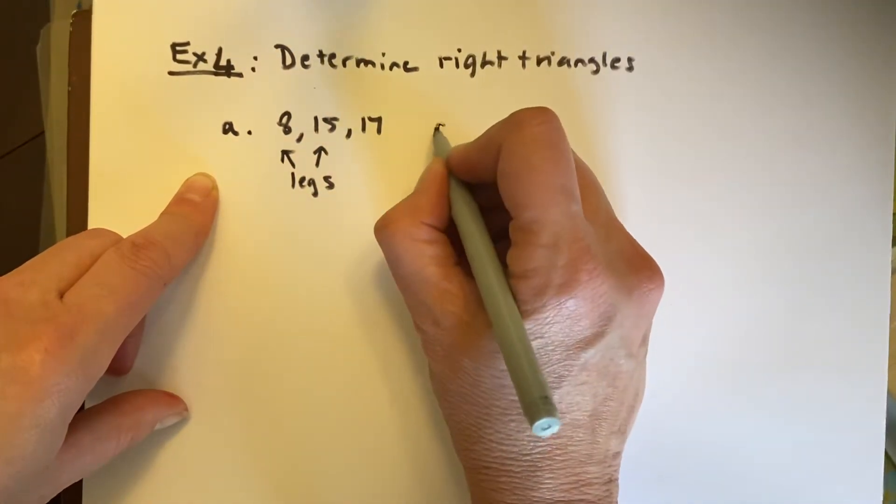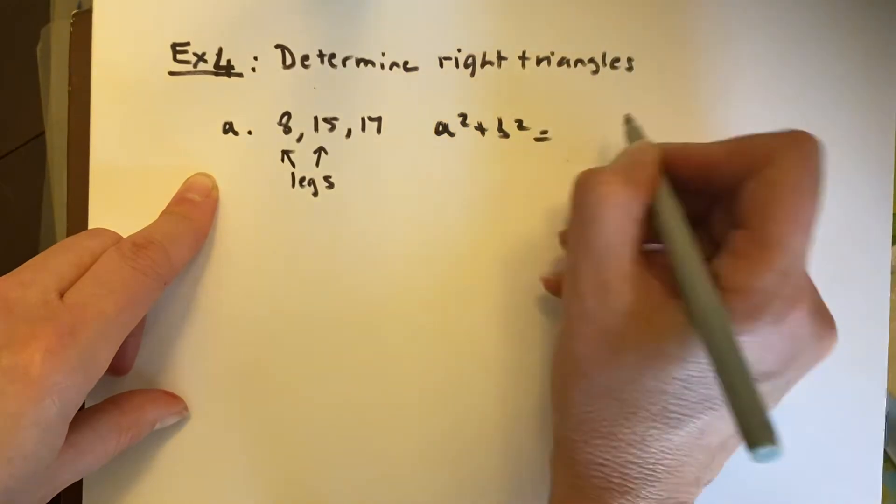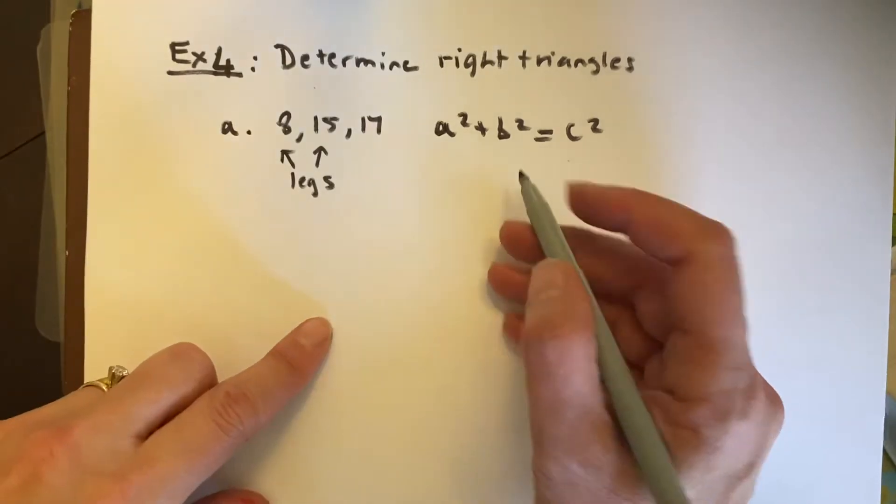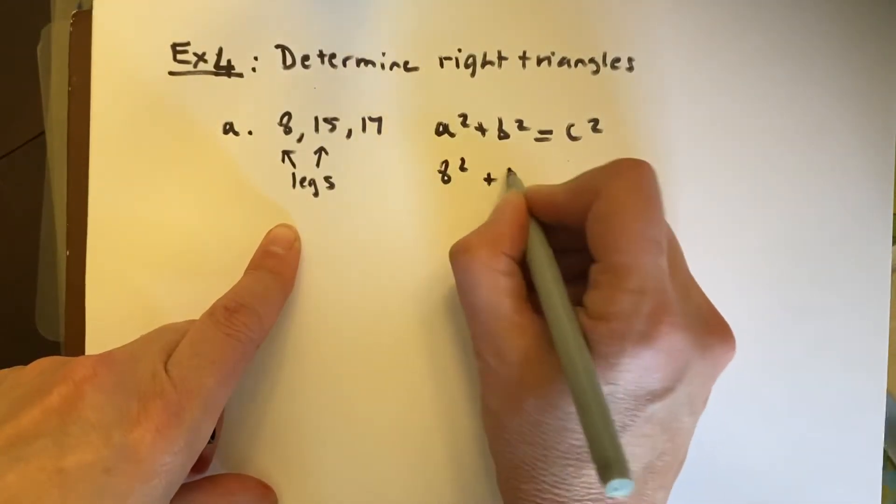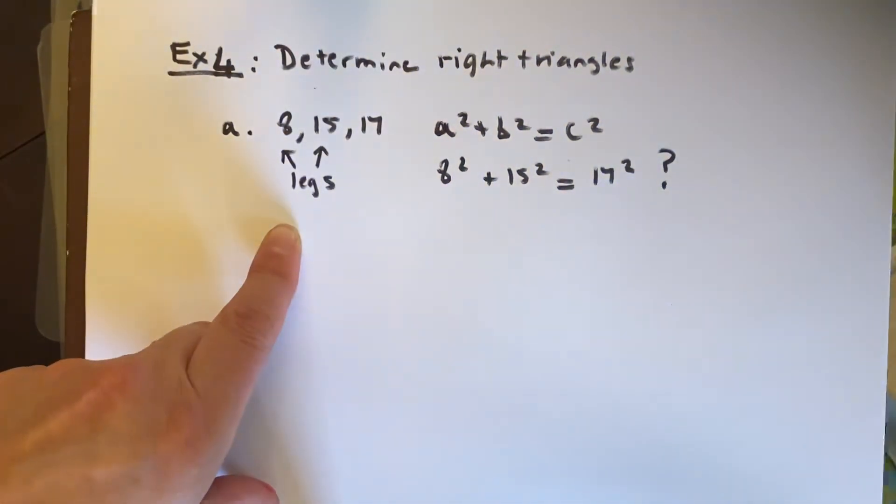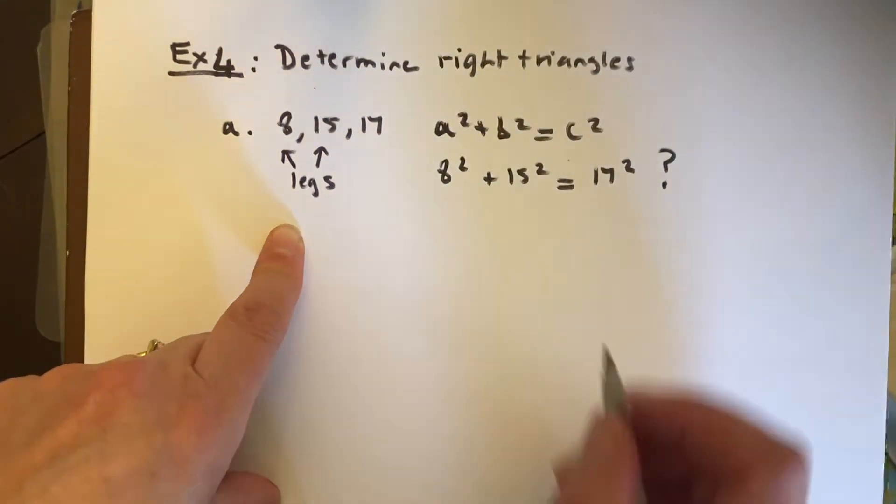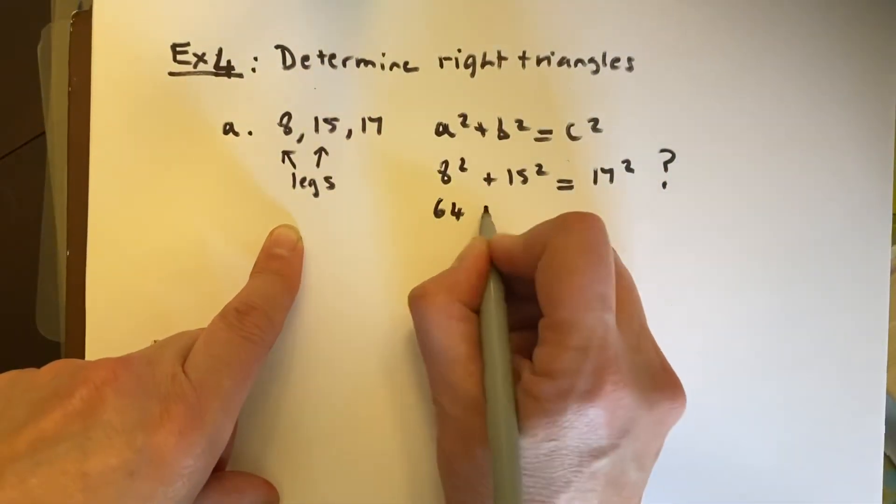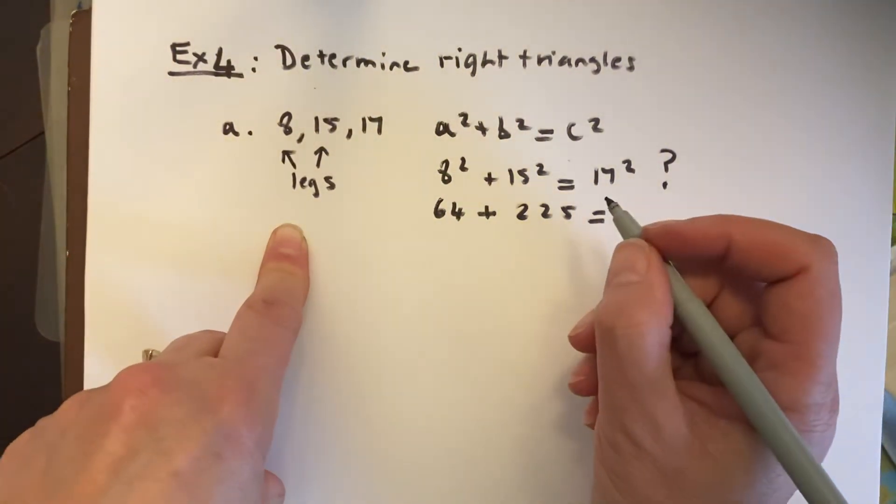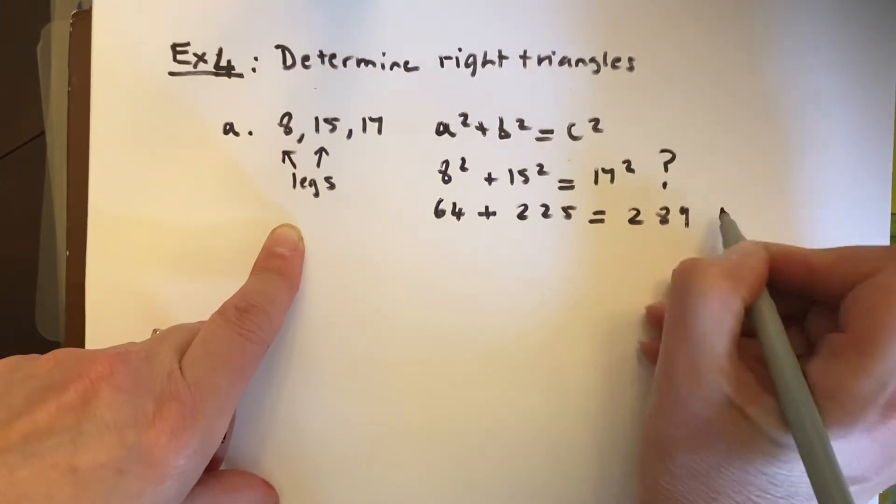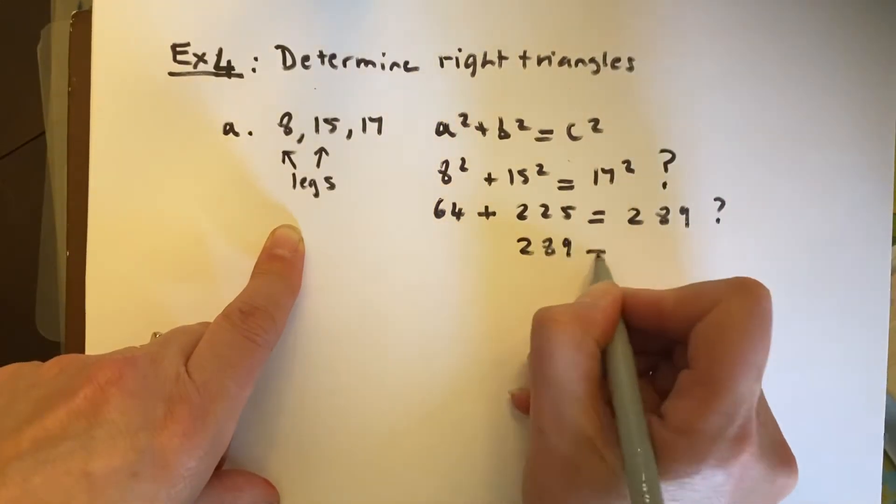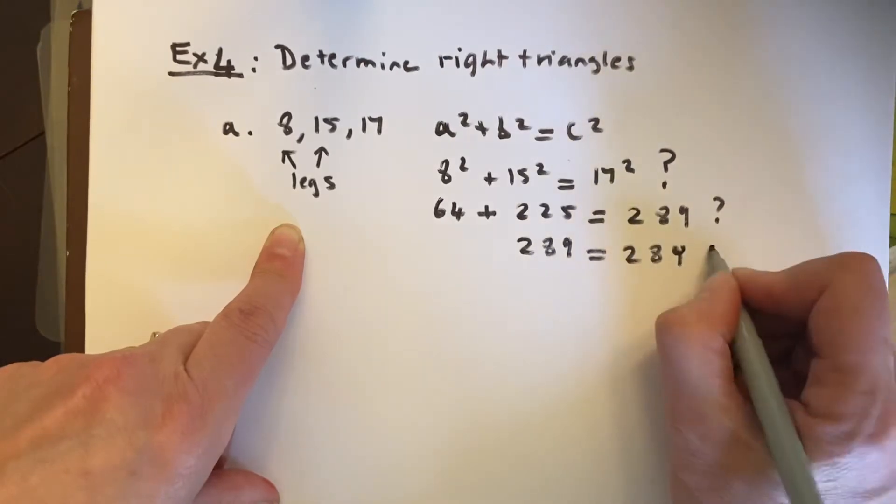And so if we take this and we say, a squared plus b squared equals c squared. If it's a right triangle, these will work out. So let's try it. 8 squared plus 15 squared equals 17 squared. Is that true? Is that a true statement? Well, if we do that out, we get 64 plus 15 squared is 225. And 17 squared is 289. Are these things equal? Yes, you can see if you add this, you're going to get 289 equals 289. This is a true statement.